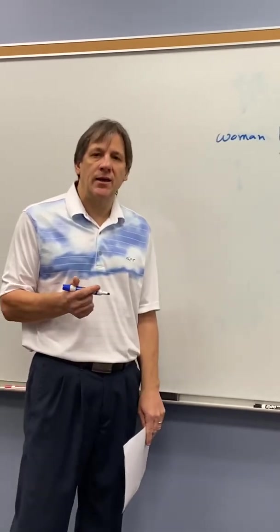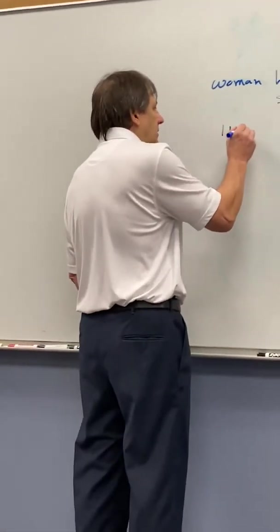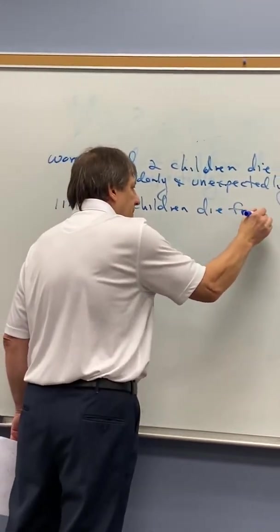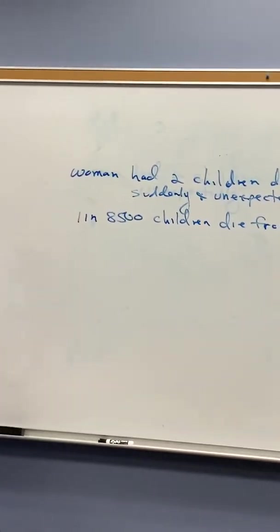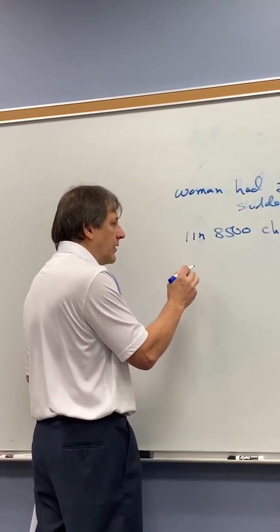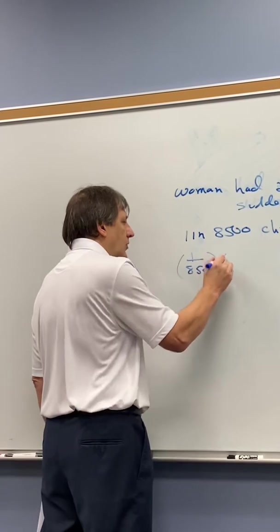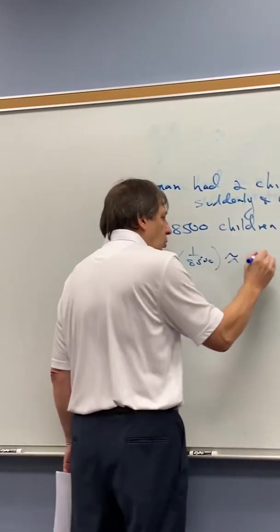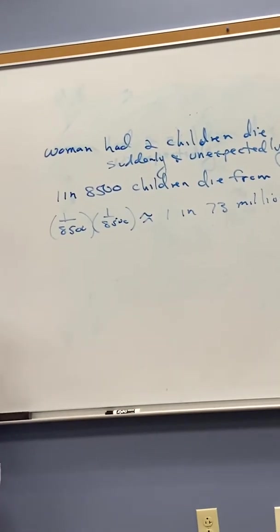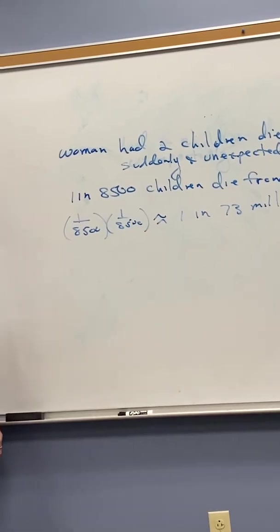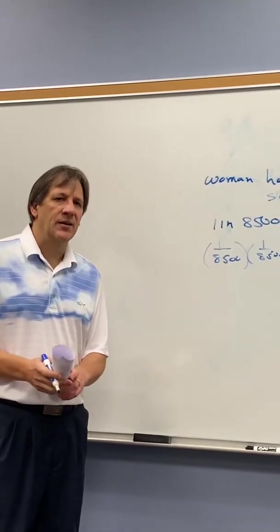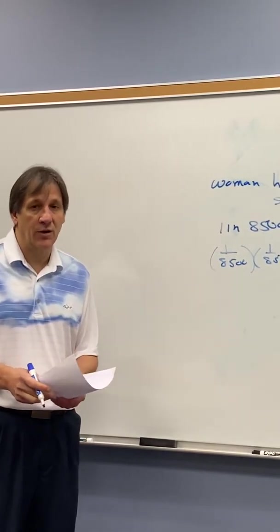The prosecution brought in a witness that claimed one in 8,500 children die from SIDS. So, for two children to die from SIDS, we would use a basic concept in probability which would multiply 1 over 8,500 times 1 over 8,500, and that's approximately 1 in 73 million cases. The witness claimed that there's just a 1 in 73 million chance that these two both died from SIDS, and that was a strong argument to end up convicting her.